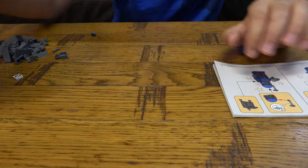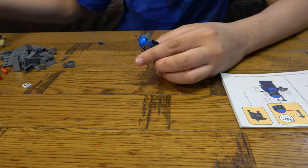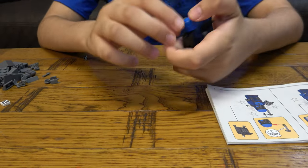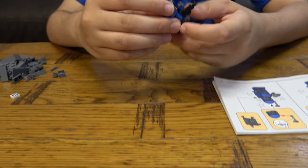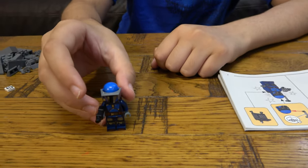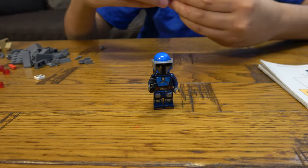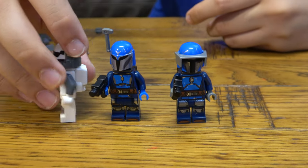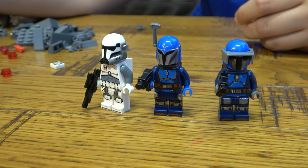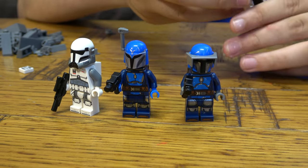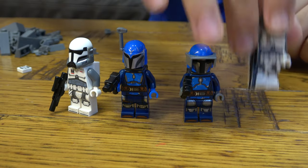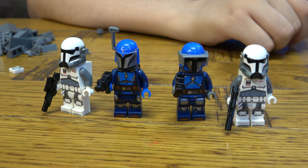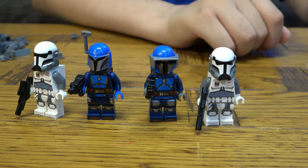We need to build our minifigures. So we have our first Mandalorian, our second, and our two Imperial Commandos. If you haven't watched the unboxing video, go watch that first by the way. There we go.